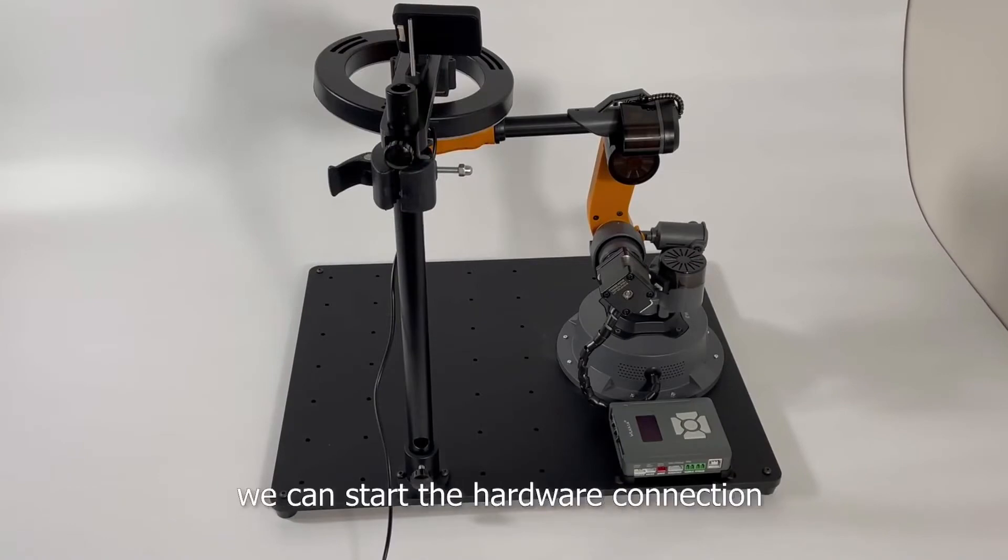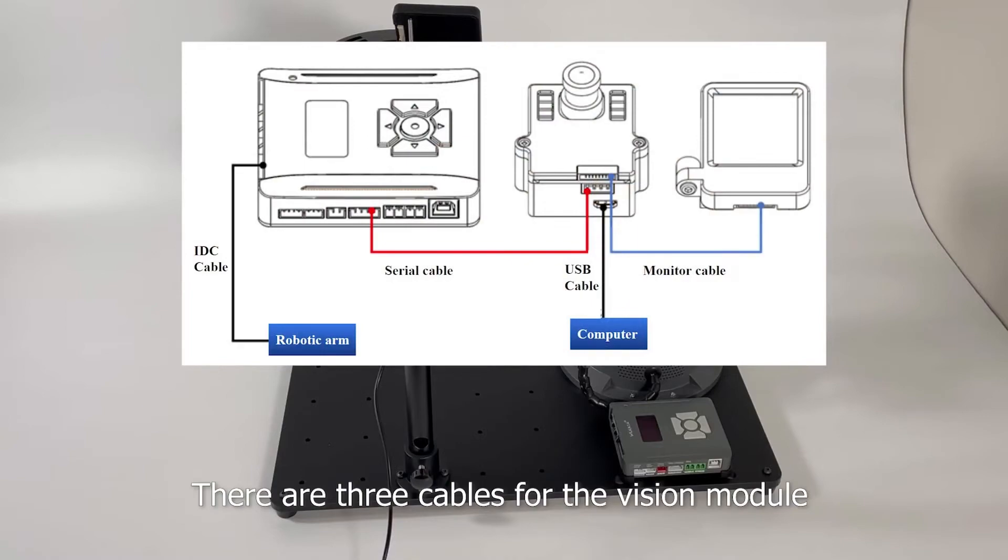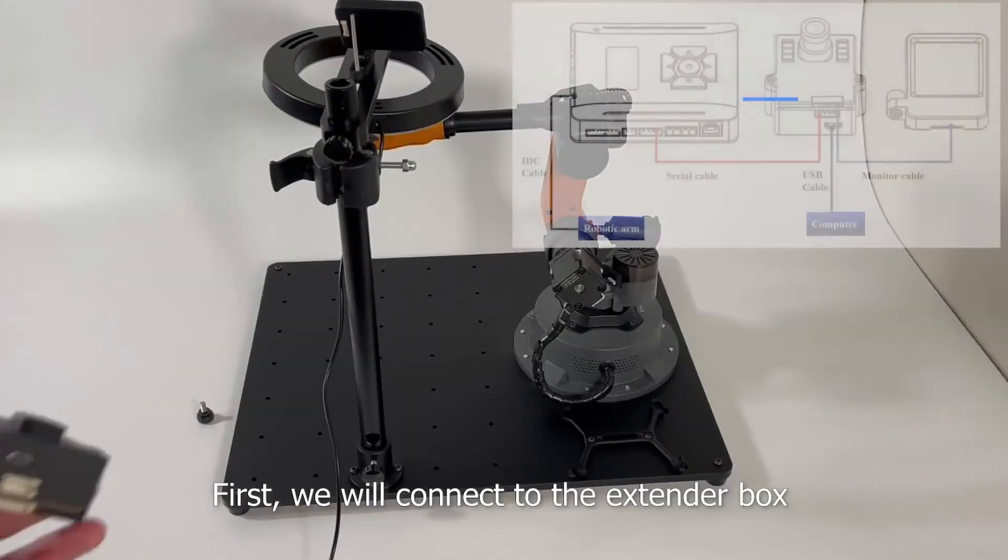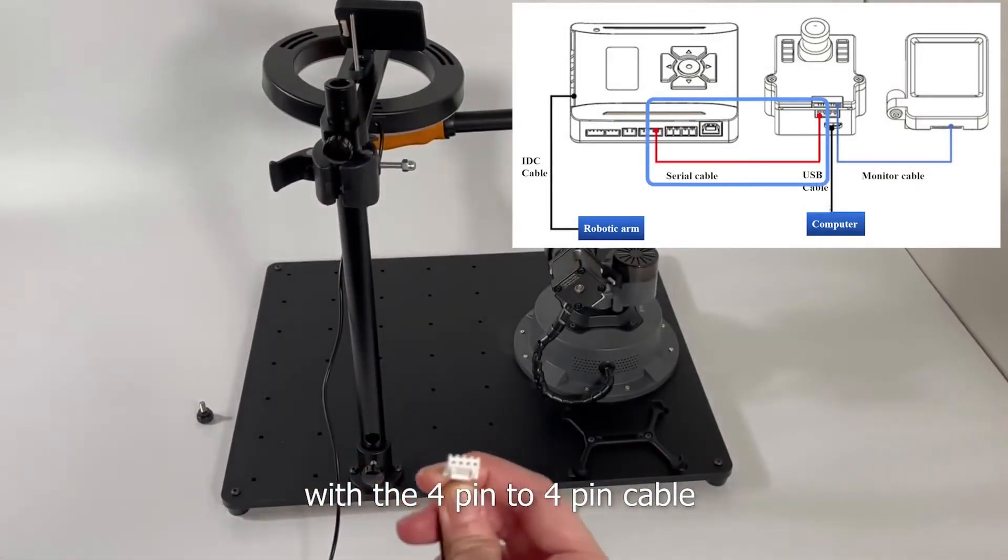After all the setup, we can start the hardware connection. There are three cables for the Vision module. First, we will connect to the extender box with the 4-pin to 4-pin cable.